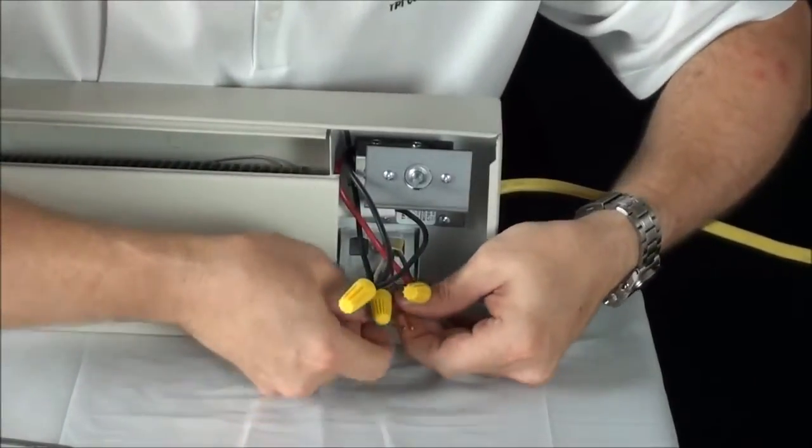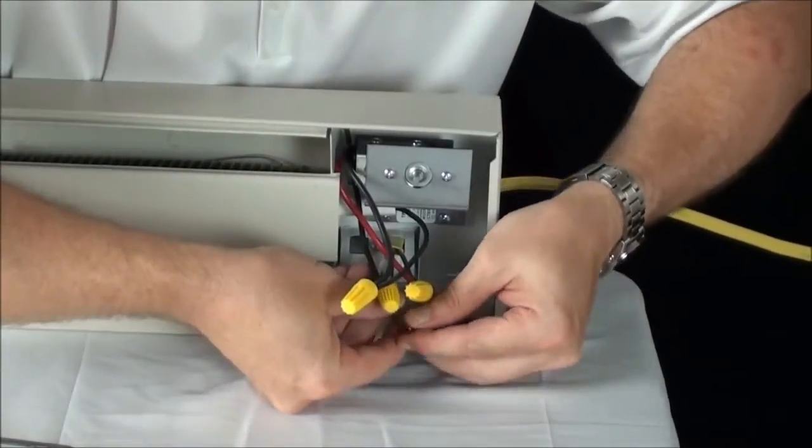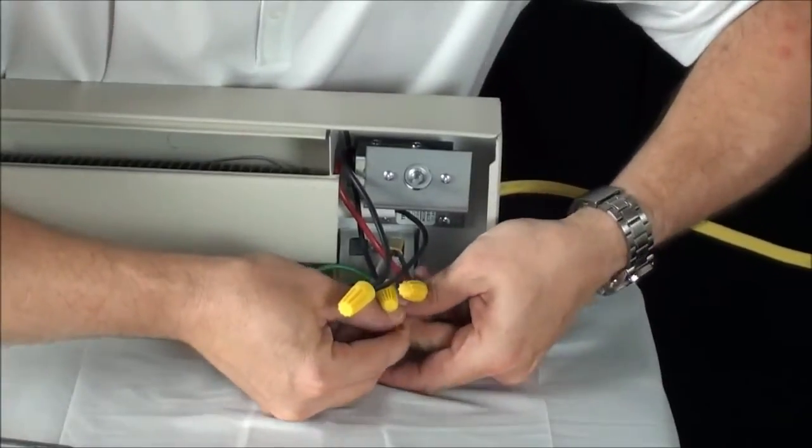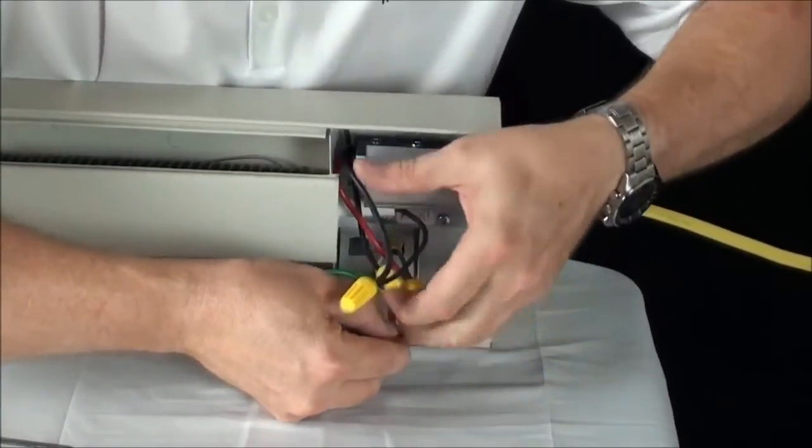Last but not least, we'll hook the ground wires together. The one coming from the power source and the one that's attached to the baseboard.